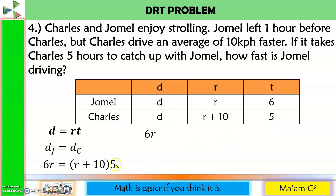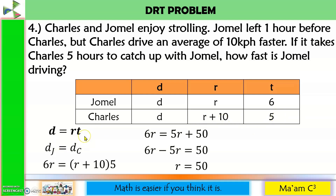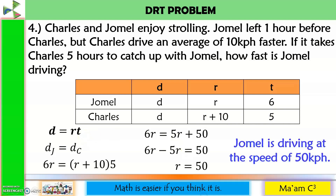So 6R equals 5R plus 50. Moving 5R to the left: 6R minus 5R equals 50, so R equals 50. Checking: Jomel travels 50 times 6 equals 300 km. Charles travels (50 plus 10) times 5 equals 60 times 5 equals 300 km. Their distances are equal. Therefore, Jomel is driving at the speed of 50 km per hour.